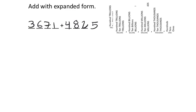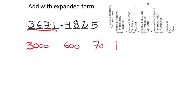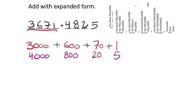We're going to add with expanded form. Starting with the number on the left, I have three in my thousands place — that's 3,000. Six in my hundreds — that's 600. Seven tens is 70. And one individual one. In expanded form we show this with addition. Then we're adding 4,825: four thousands is 4,000, eight hundreds is 800, two tens is 20, and five ones. This is all addition, and it's preparing us for stacked addition.